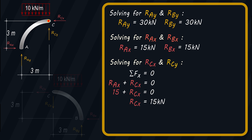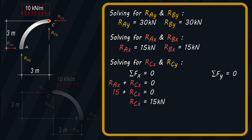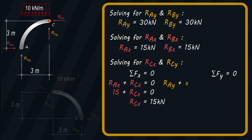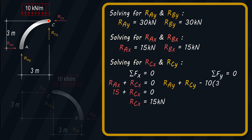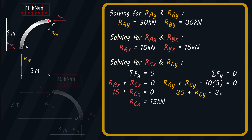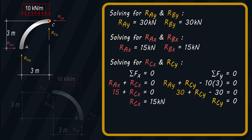Now, solving for the value of RCY, we'll use the summation of forces along Y equals zero, taking upward forces as positive. We have: RAY plus RCY minus 10 times 3 equals zero. Substituting the value of RAY, which is 30 kN, and solving for RCY, we get the result equal to zero.